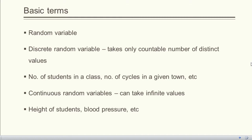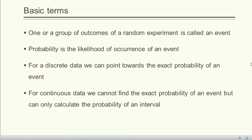Continuous random variables can take infinite values. Height of students and blood pressure are examples. In the case of height, even if we assume the height is between three feet and seven feet, there are infinite possible values in that interval. One or a group of outcomes of a random experiment is called an event. Probability is the likelihood of occurrence of an event.